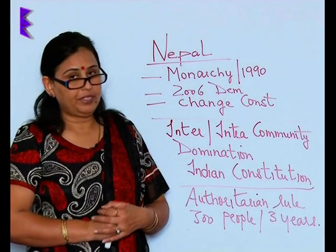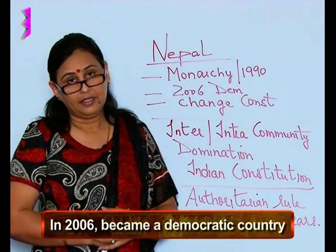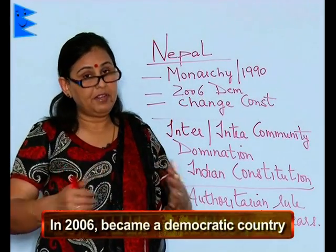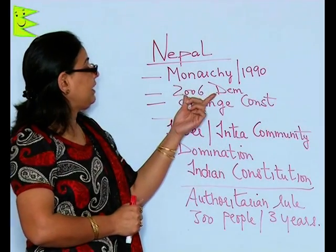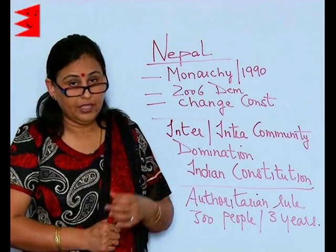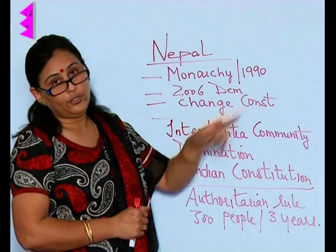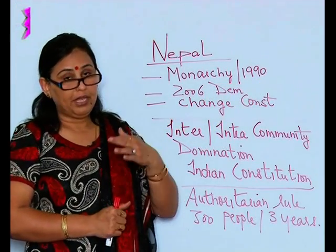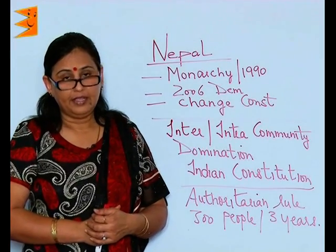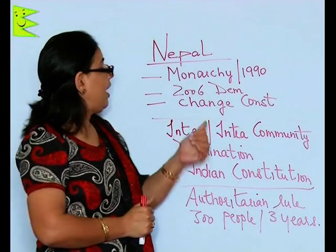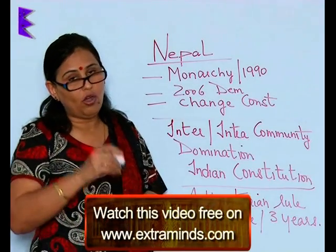As time passed, people struggled hard and wanted to bring about democracy in Nepal. The struggle reaped fruits when in 2006 democracy was established and Nepal became a democratic country. When they turned into a democratic nation, the first difficulty they faced was that the earlier Constitution of 1990 became invalid, because it clearly stated that the king was all powerful.